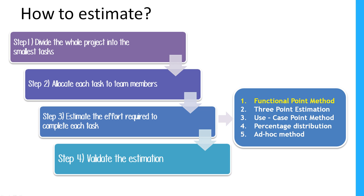There are certain steps to follow. The first step is to divide the whole project into smaller tasks. The second is to allocate each task to team members. The third is to estimate the effort required to complete each task, using estimation techniques. The fourth step is to validate whether the estimation is correct. These are the four steps when performing estimation of a project or task.